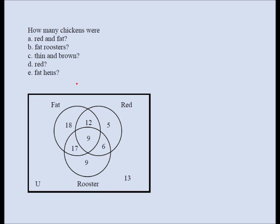How many chickens are red and fat? Red and fat has no reference to gender, so it includes both fat red hens (12) and fat red roosters (9). That's 12 plus 9 equals 21. Part A is 21. Part B: fat roosters must be fat and in the rooster circle, regardless of color — fat red roosters (9) plus fat brown roosters (17) equals 26.